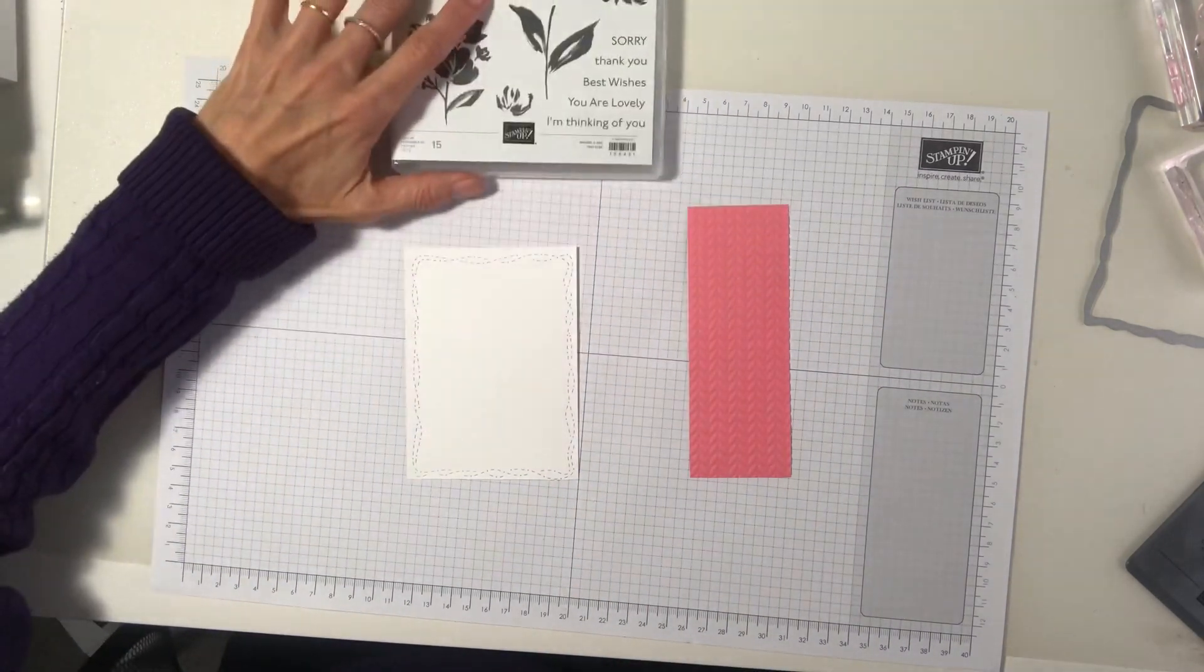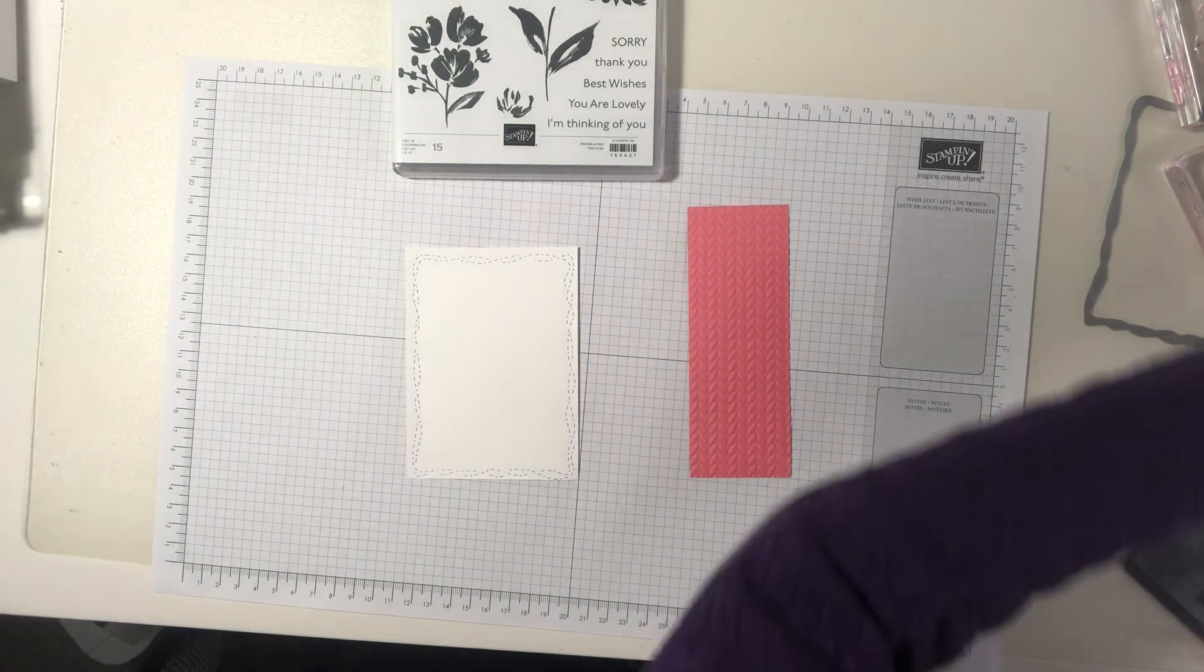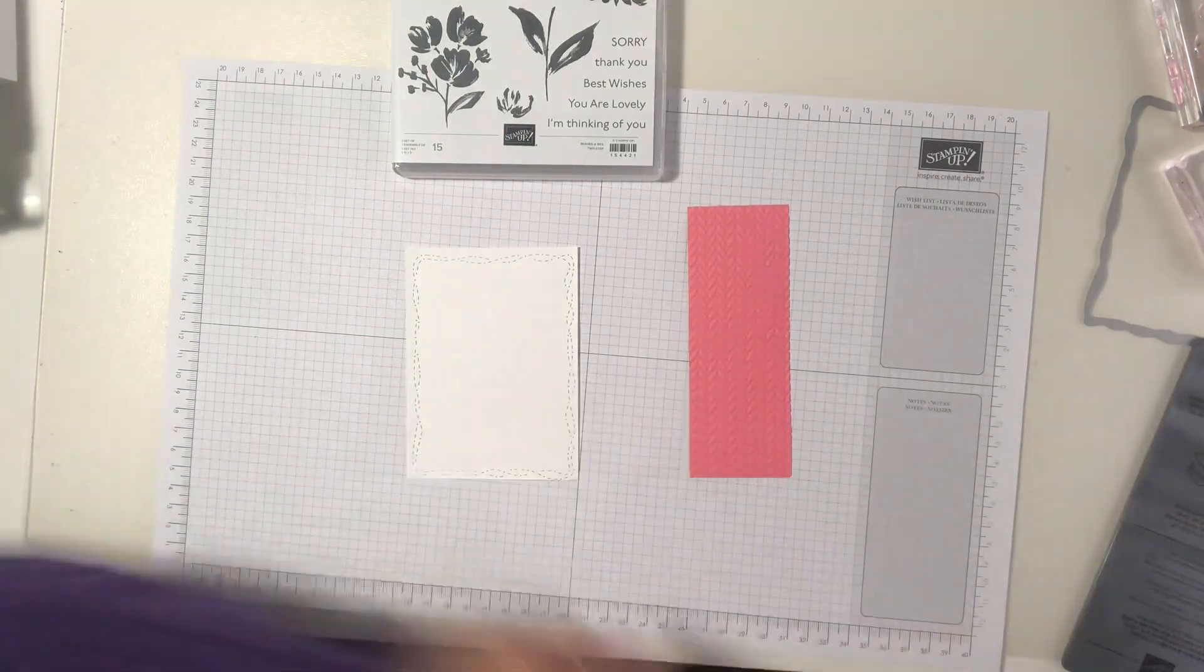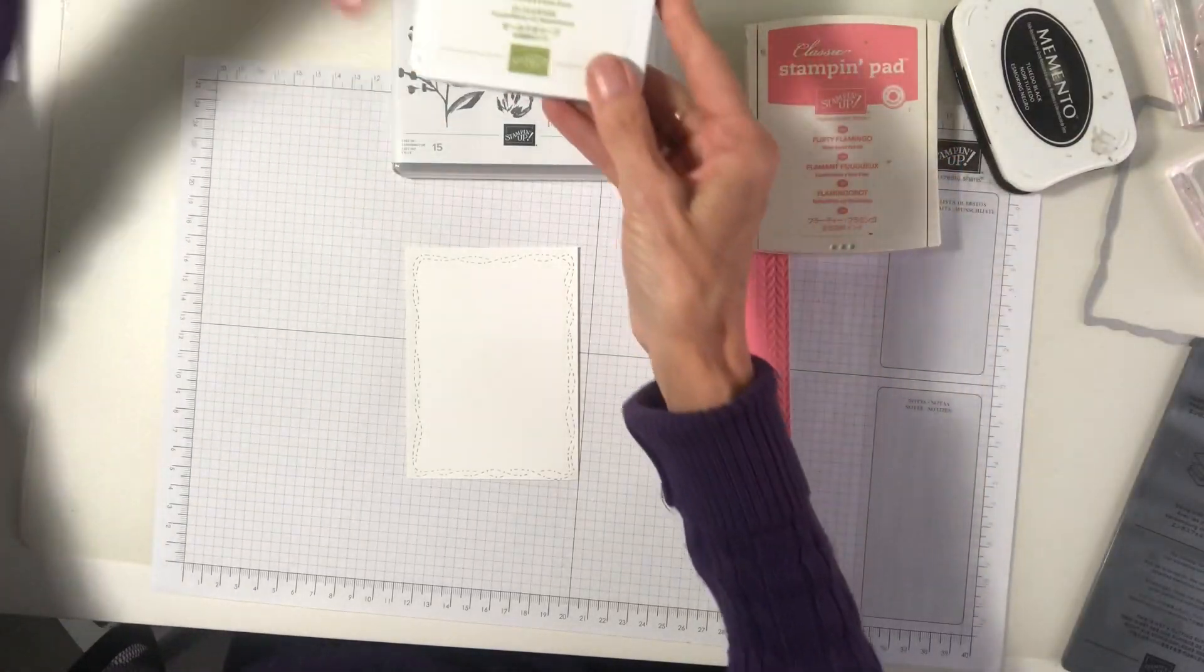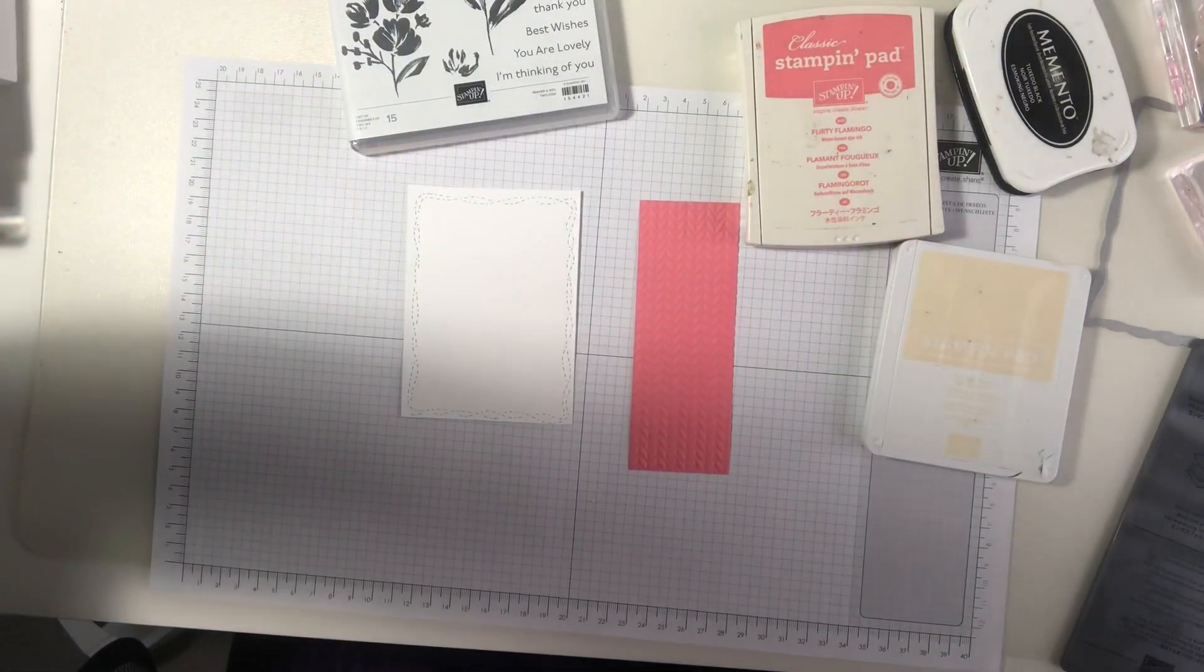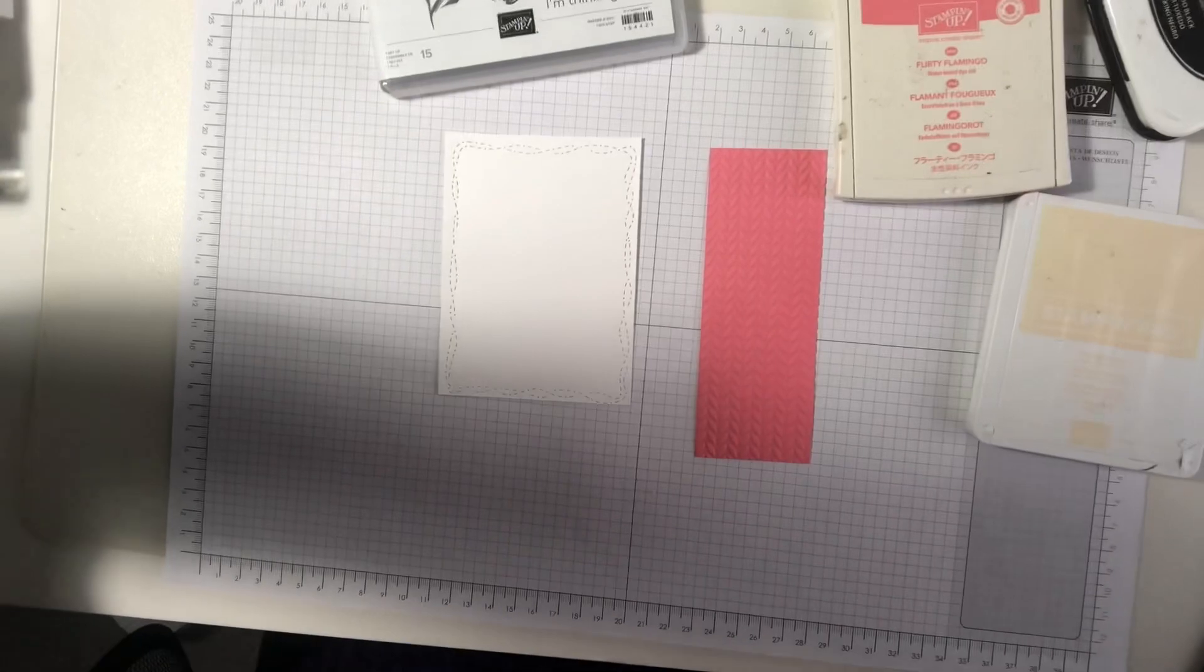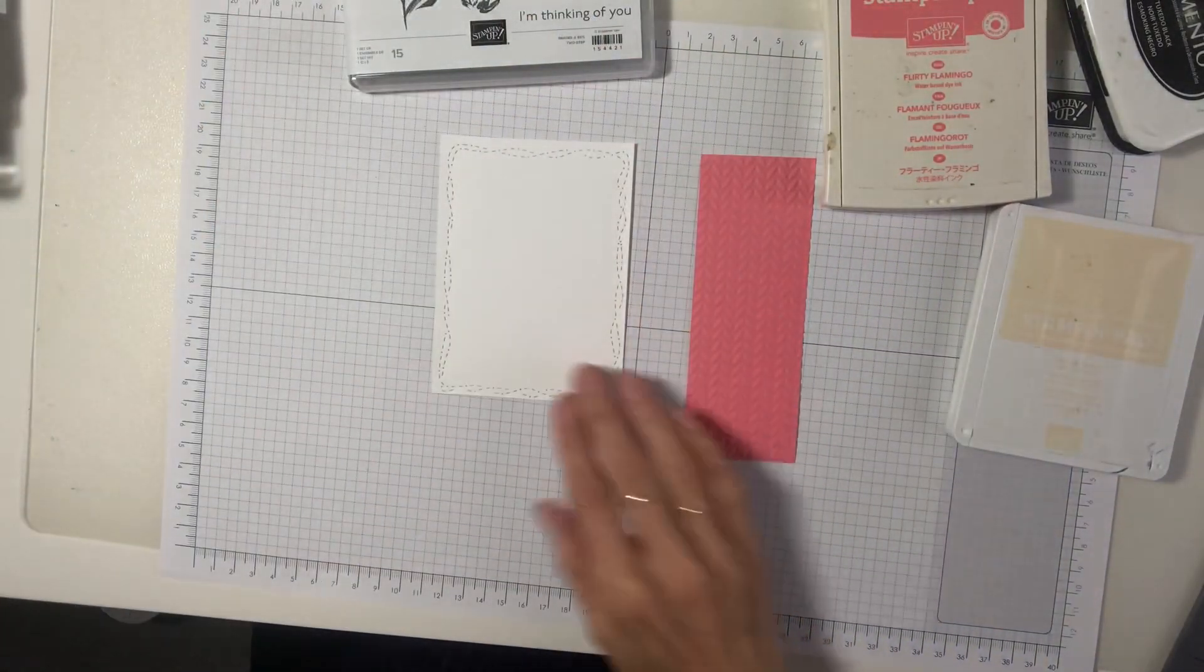So let's bring some ink in. I'm going to use our Flirty Flamingo, Old Olive and Petal Pink. I'm going to move this down a little bit more so you can see. I'm going to show you some tips on how to line up those two step stamps too.